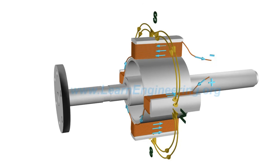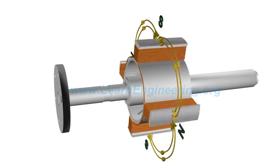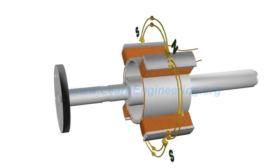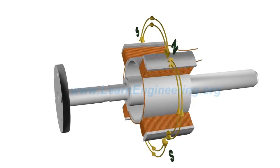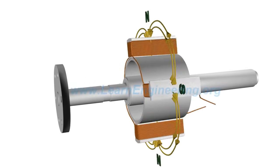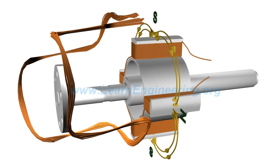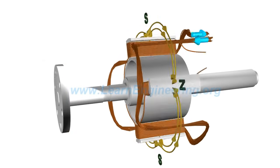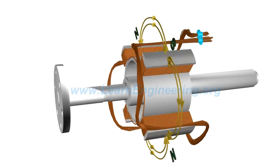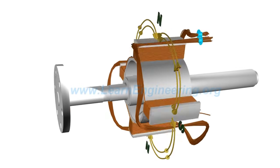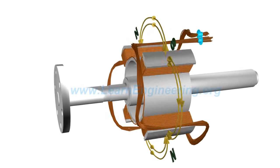The rotor is made to rotate by a prime mover. This makes the rotor flux also rotate along with it at the same speed. Such revolving magnetic flux now intersects the armature coils, which are fitted around the rotor. This will generate an alternating EMF across the winding.